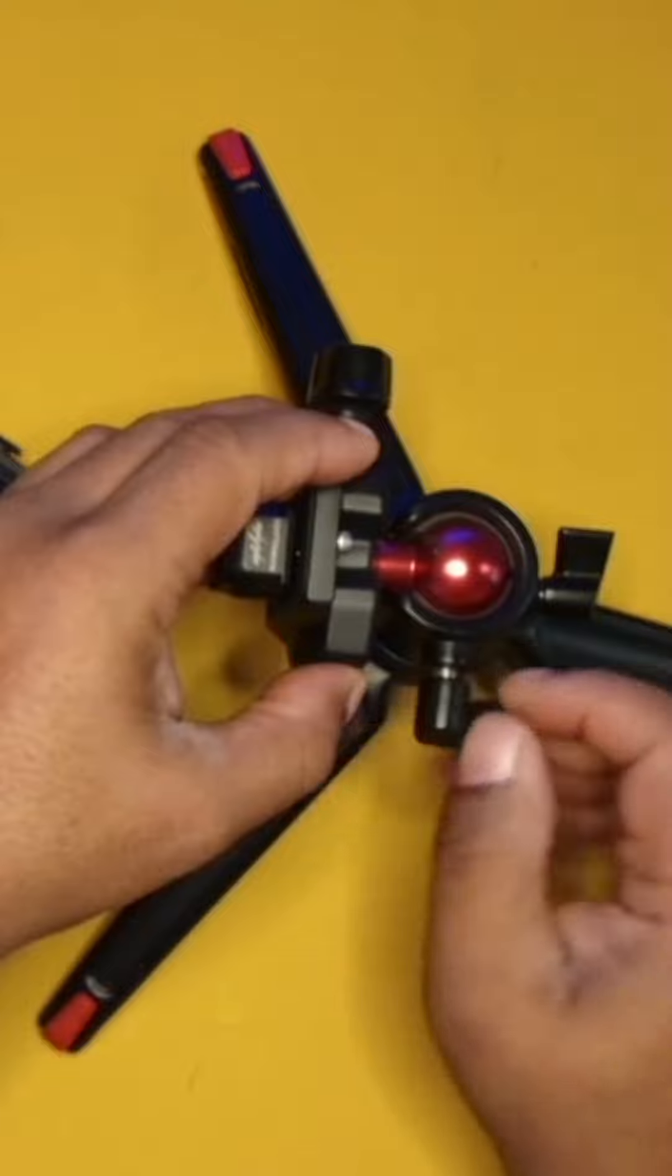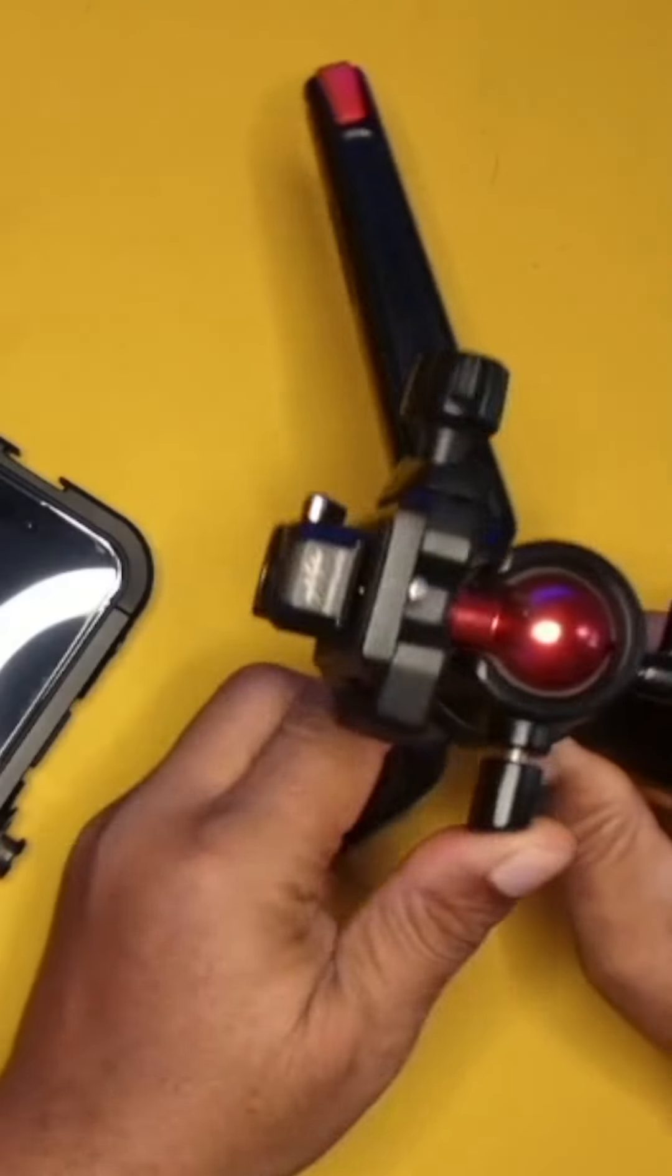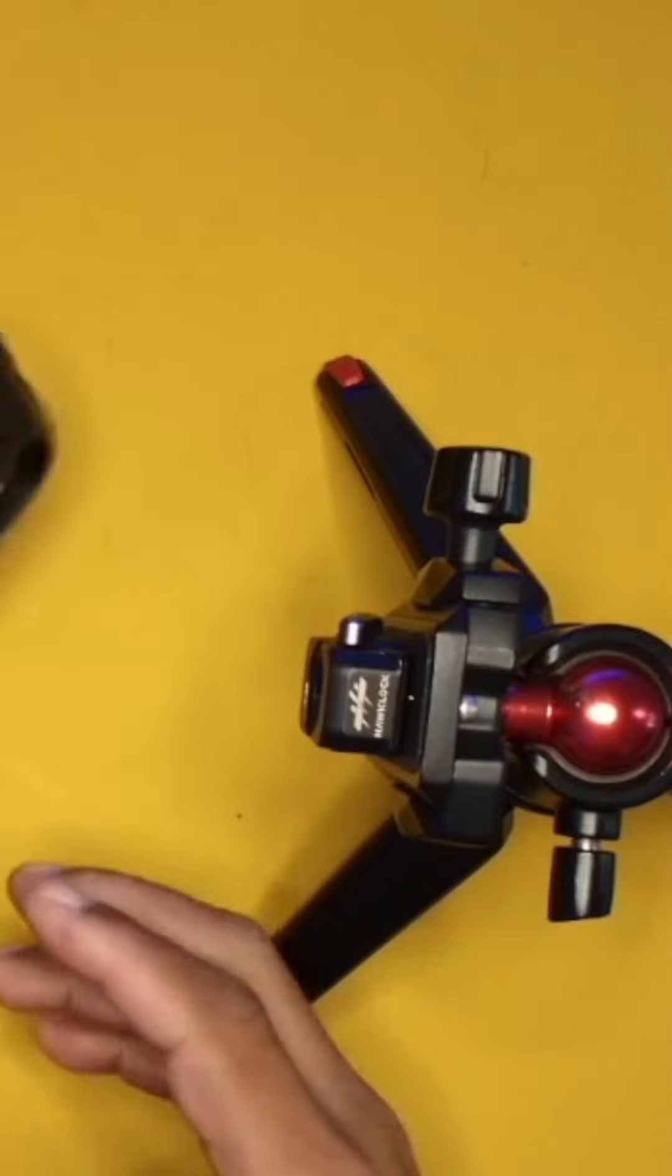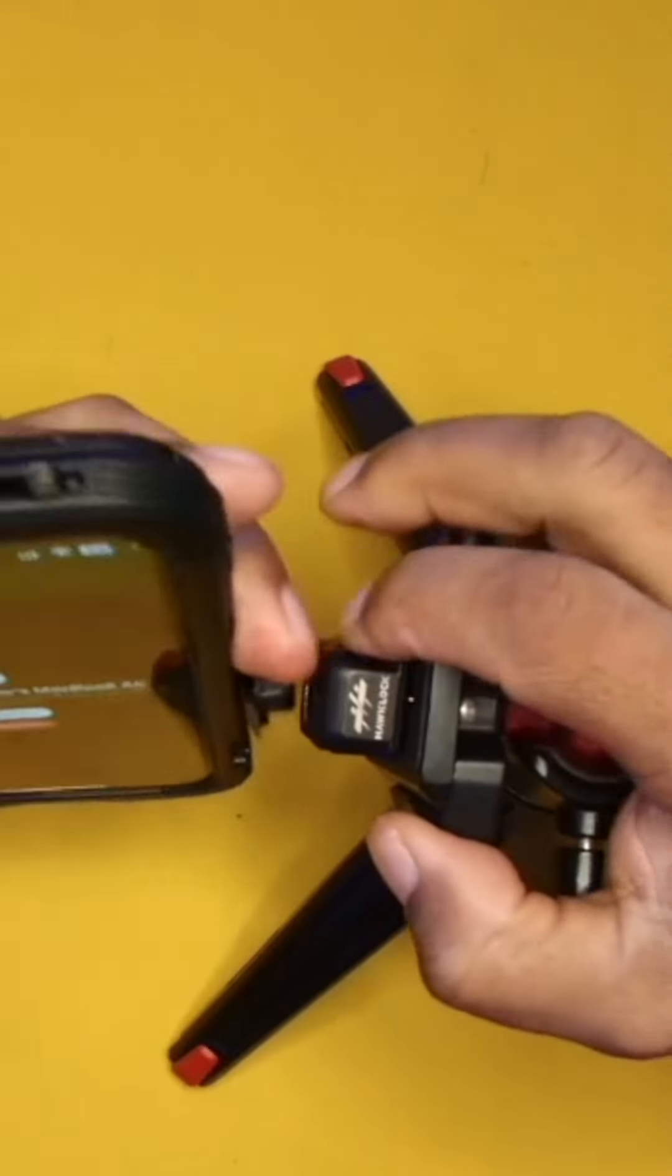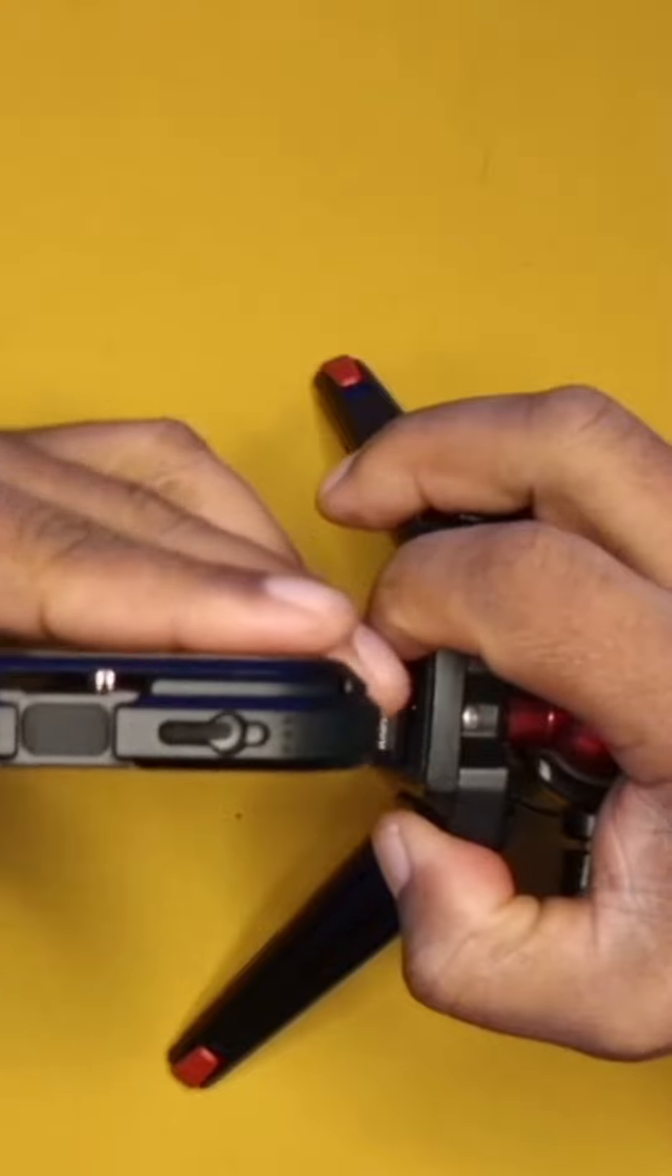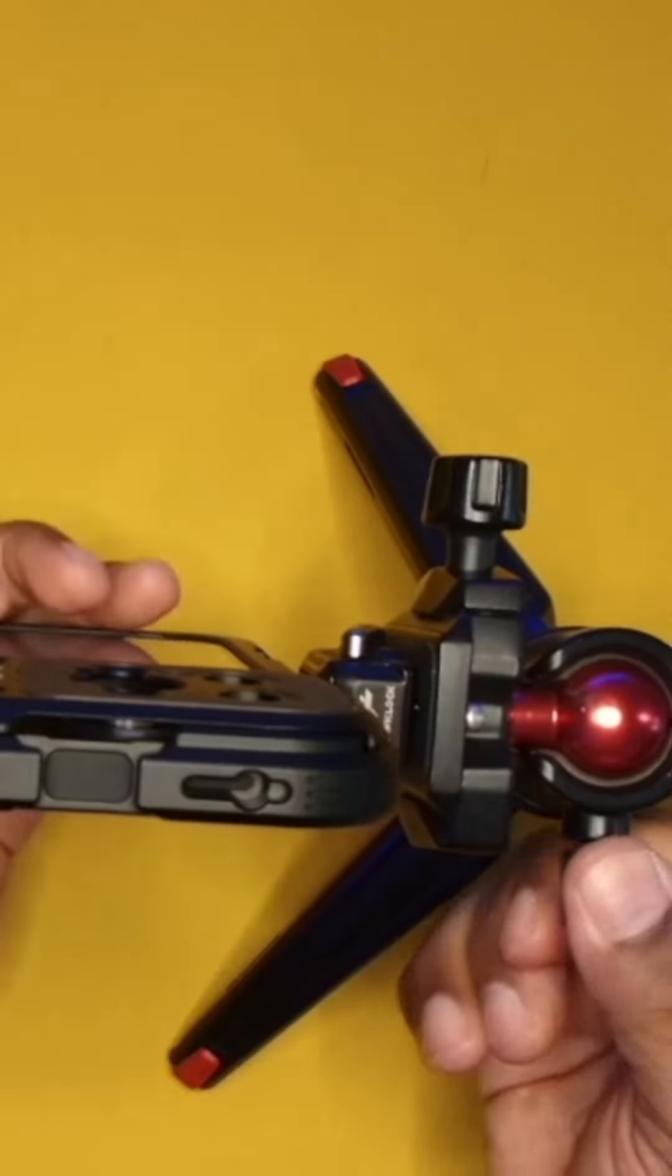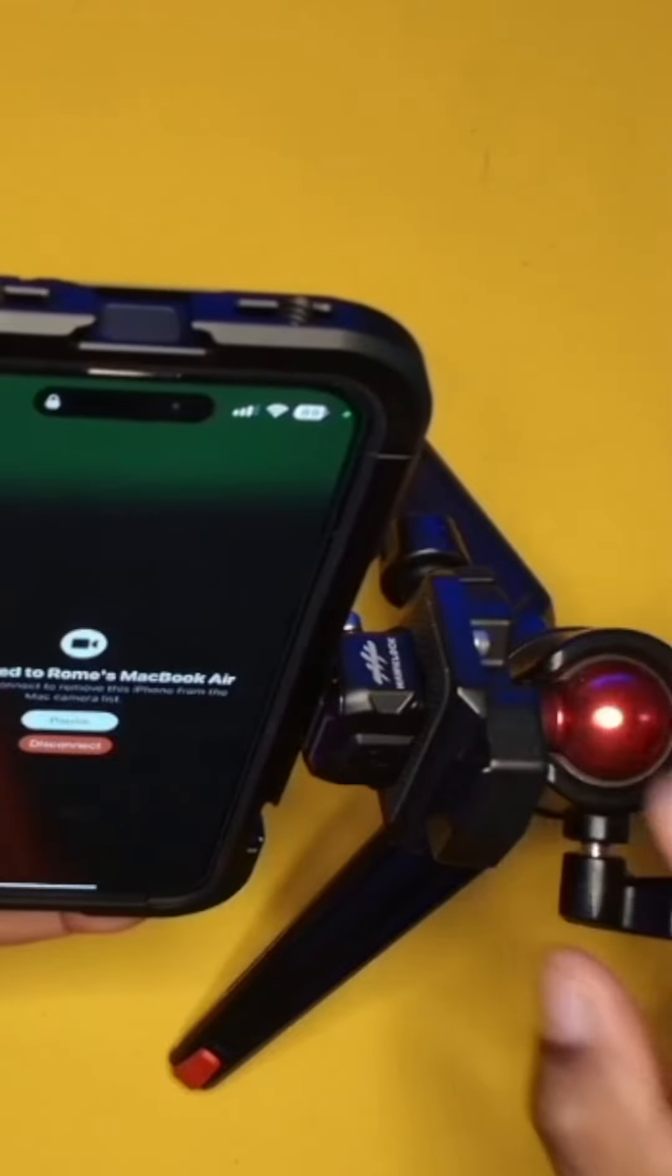Normally I have it set up something like this and I extend the legs up just a bit. Then I can take my phone and connect it with the quick release, and I can adjust it to whichever direction I want it to go.